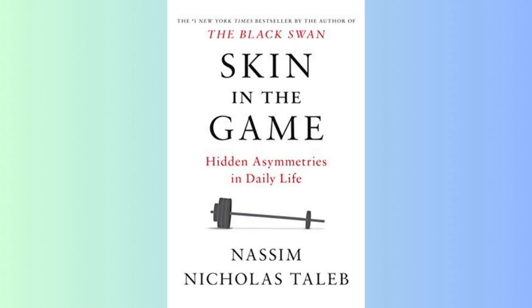It started with Hammurabi's code, which aimed to prevent tail risk transfers and hold people accountable. This principle has been central to law and ethics up to Kant. An example is Hammurabi's rule that if a builder's shoddy work causes a homeowner's death, the builder should be executed. This establishes symmetry and aligns incentives — the builder can't transfer the risk of extreme tail-end events. The author sees symmetry and skin in the game as defining ethics and sound governance. Bureaucracies and interventionists who lack skin in the game and accountability are the opposite.